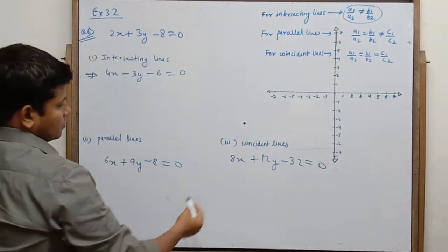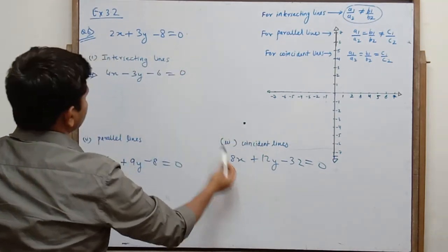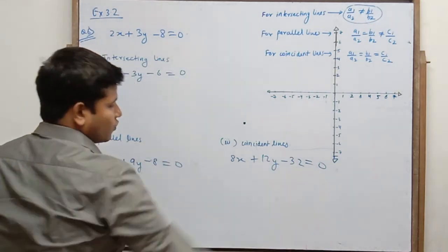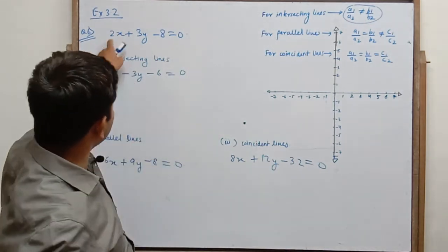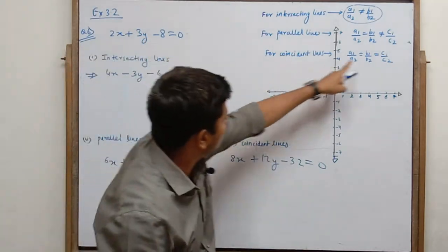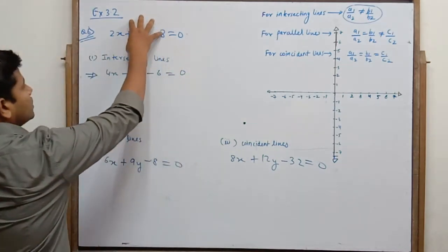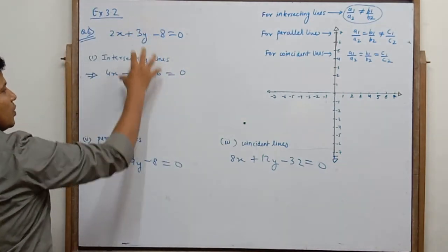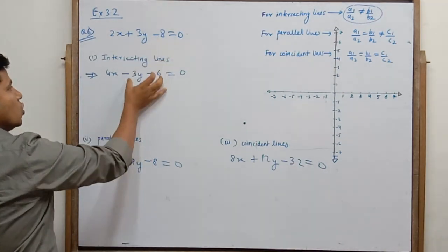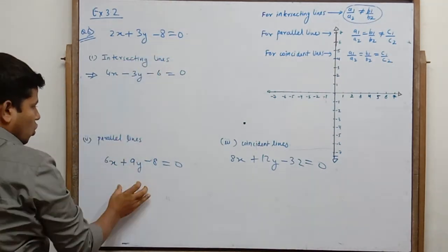यहाँ से 4 common ले लिया तो यह same equation मिल जाएगा। If you take 4 common from here, you will get the same equation — you have multiplied by 4 times. So once a1/a2 = b1/b2 = c1/c2, you get the coincident line. So we have made 3 equations: one which will make intersecting lines, one parallel, and one coincident.